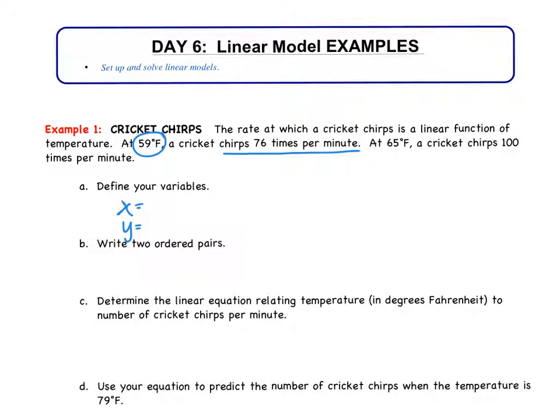Okay. X affects Y. So are we saying that the temperature affects the number of times a cricket chirps? Yes. Or is it the cricket chirping that affects the temperature? That doesn't make sense. The temperature affects the cricket chirps. So the temperature, X affects Y. So X is going to be the temperature in degrees Fahrenheit.